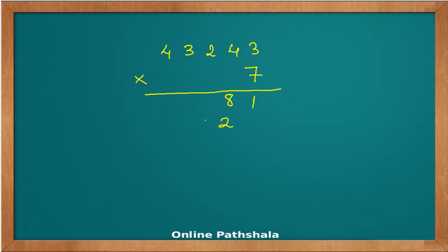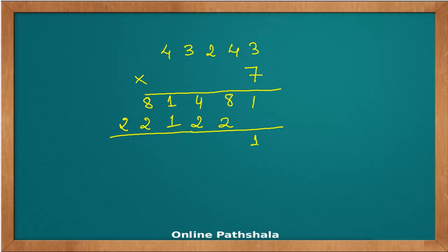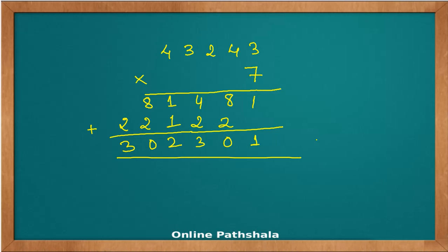Working right to left on 43243 multiplied by 7: seven times three is 21 — carry 2; seven times four is 28 — put 8, carry 2; seven times two is 14 — put 4, carry 1; seven times three is 21 — put 1, carry 2; seven times four is 28 — put 8, carry 2. Adding the final carry gives the product 302701. That's how you multiply any number by a single digit number.